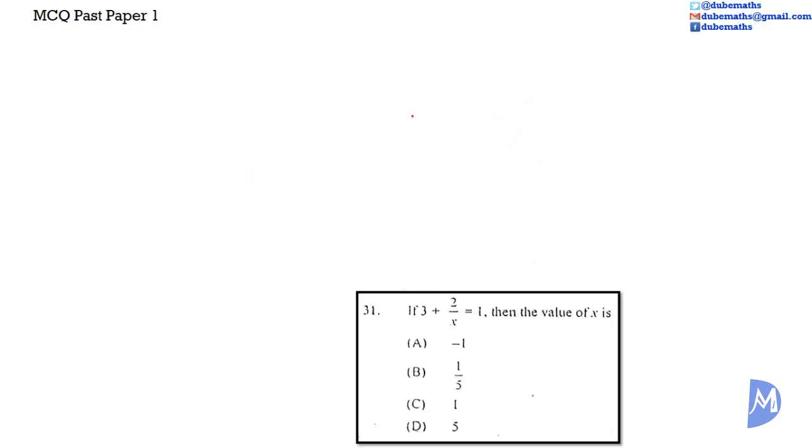Question 31. If 3 plus 2 over x is equal to 1, then the value of x is, is it A, negative 1? Is it B, 1 fifth? Is it C, 1? Or is it D, 5?